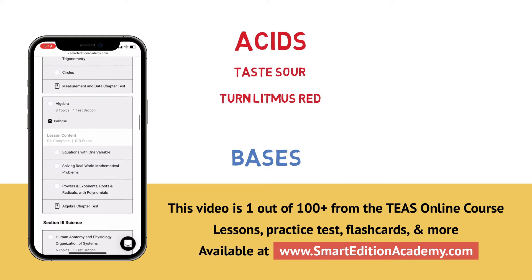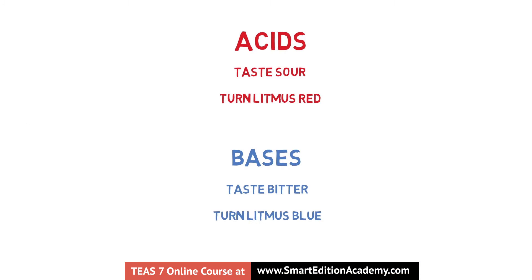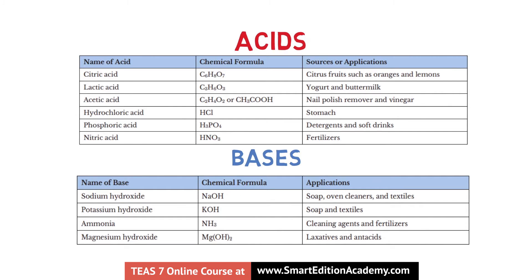Acids will taste sour and turn litmus red. Alternatively, bases will taste bitter and turn litmus blue. Now they share a property for acting corrosive or causing damage to specific materials. Looking at these lists, we can see common names and formulas, and likely examples of each from our everyday lives.